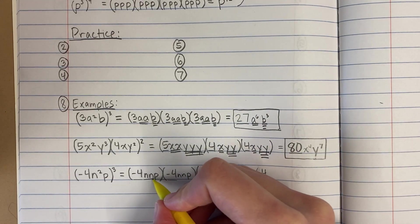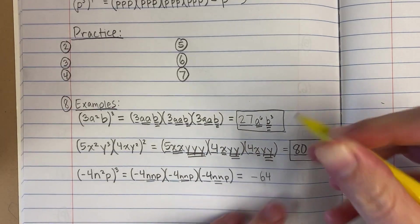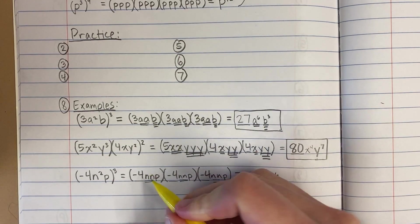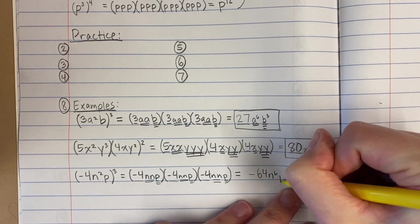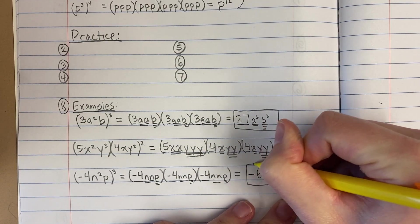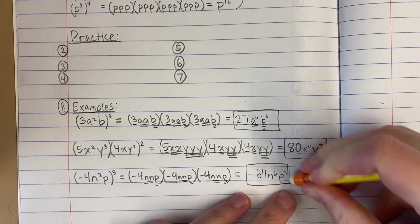Okay, and then here I have 1, 2, 3, 4, 5, 6 n's, and 1, 2, 3 p's. And there it is.